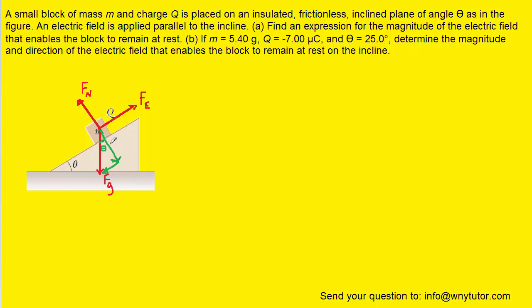So this component of gravity is adjacent to that angle. Because it's adjacent, we can use the cosine of theta to represent that component: Fg times the cosine of the angle. This component is opposite from the angle, so we use the sine of theta: Fg times the sine of theta.